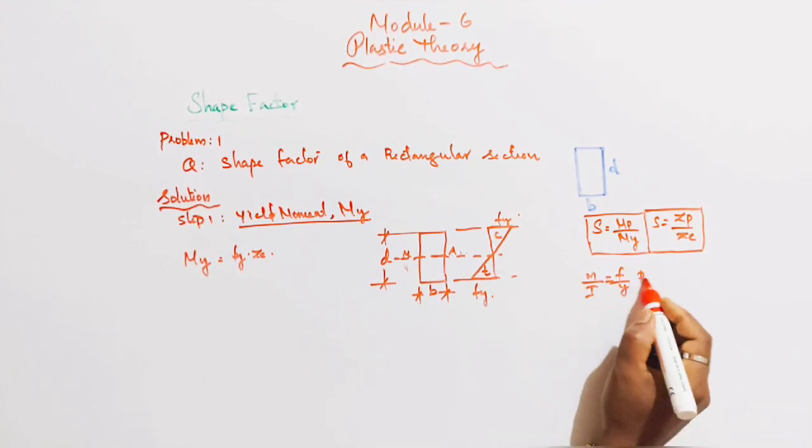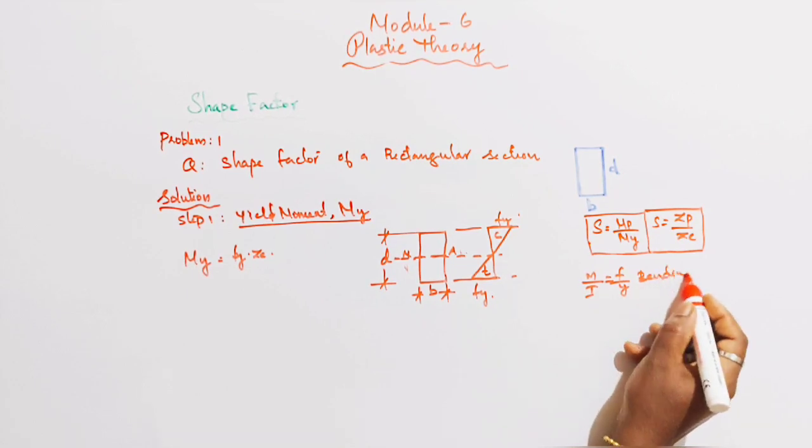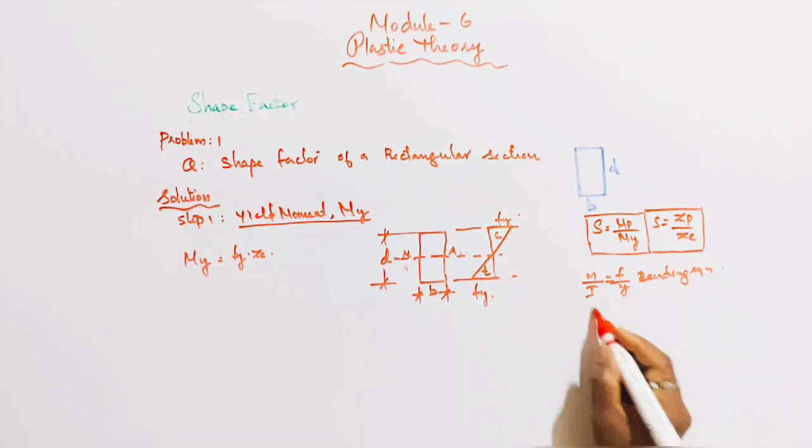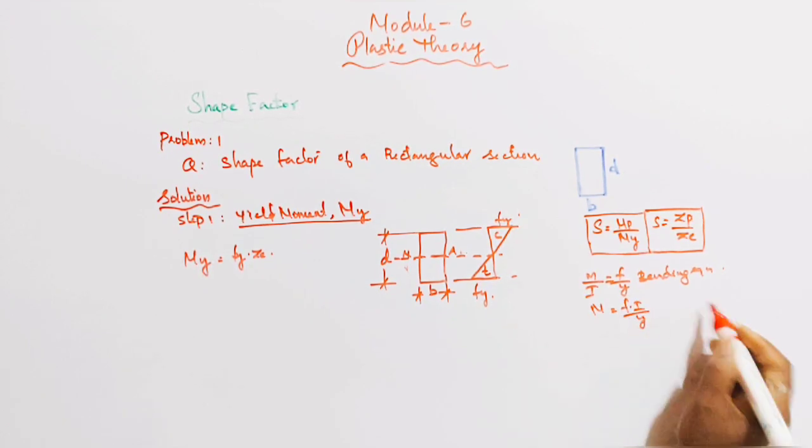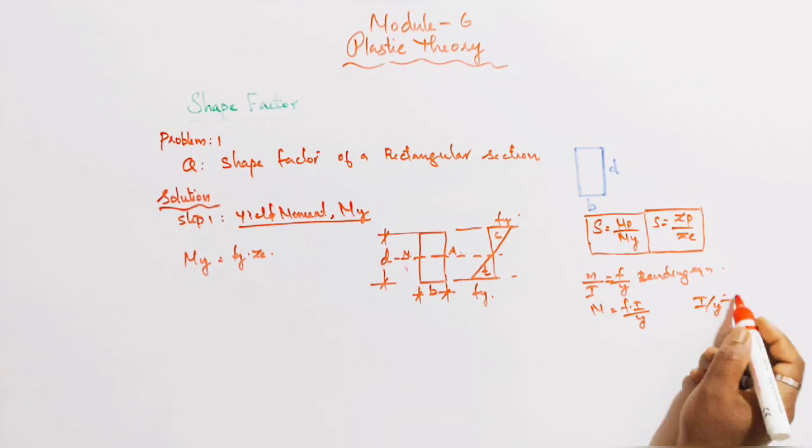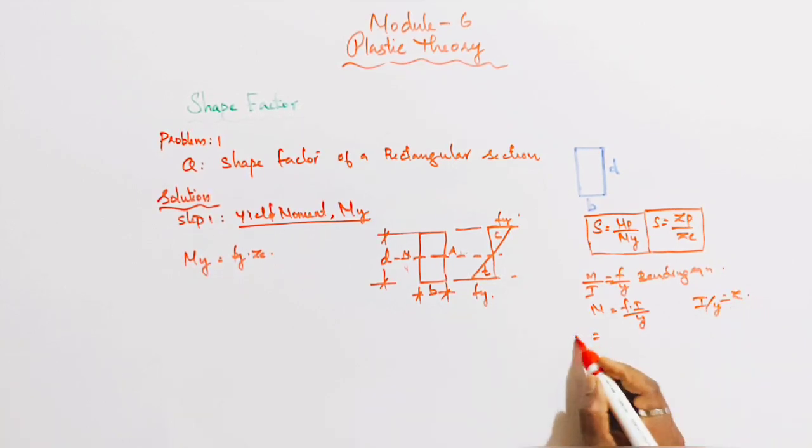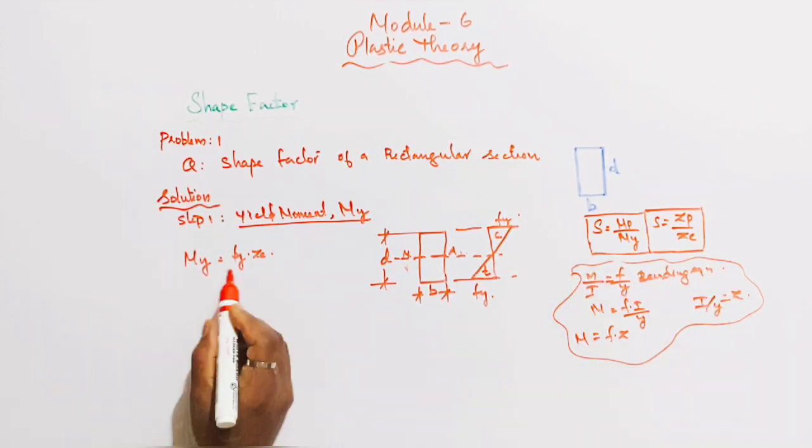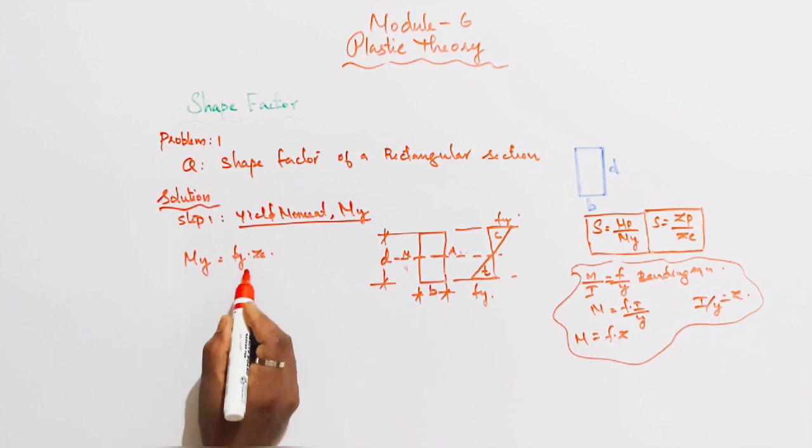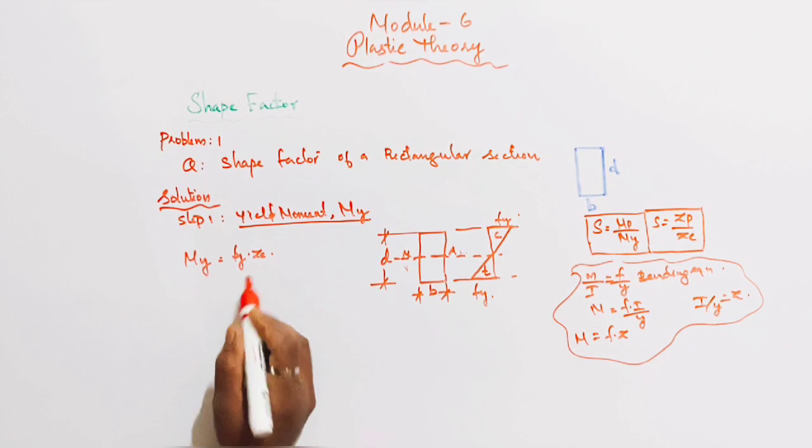Yield moment equation. Bending equation equal to F into I by Y. I by Y equal to Z. So, M equal to F into Z. For yield moment, My equal to Fy into Ze. Clear? That is clear.